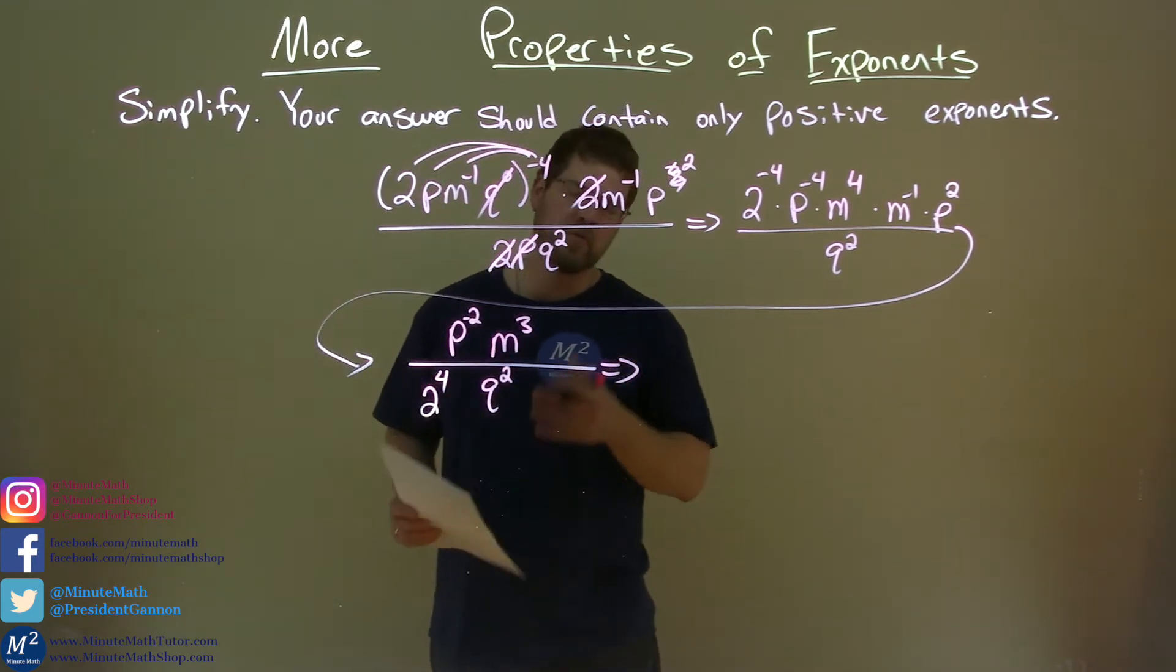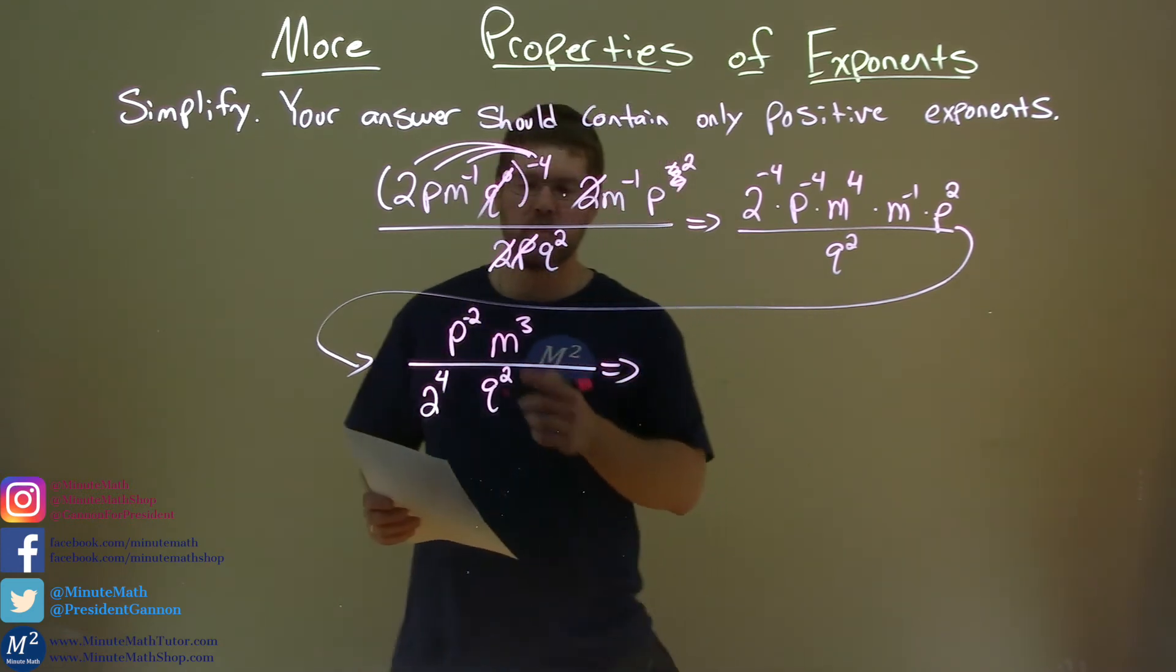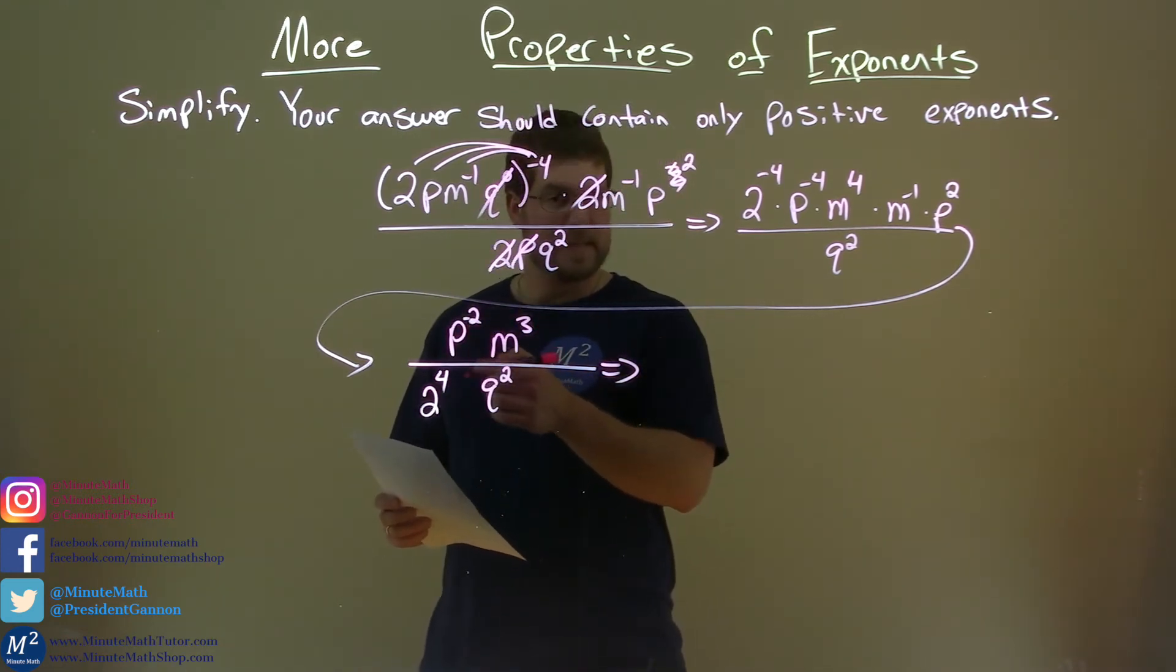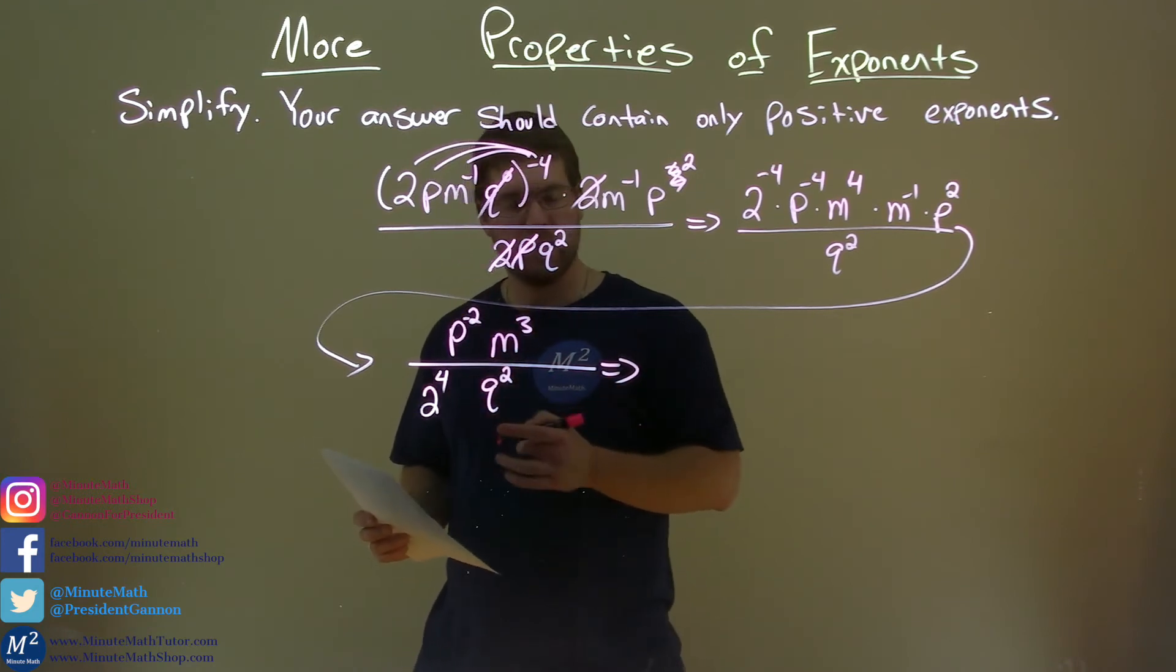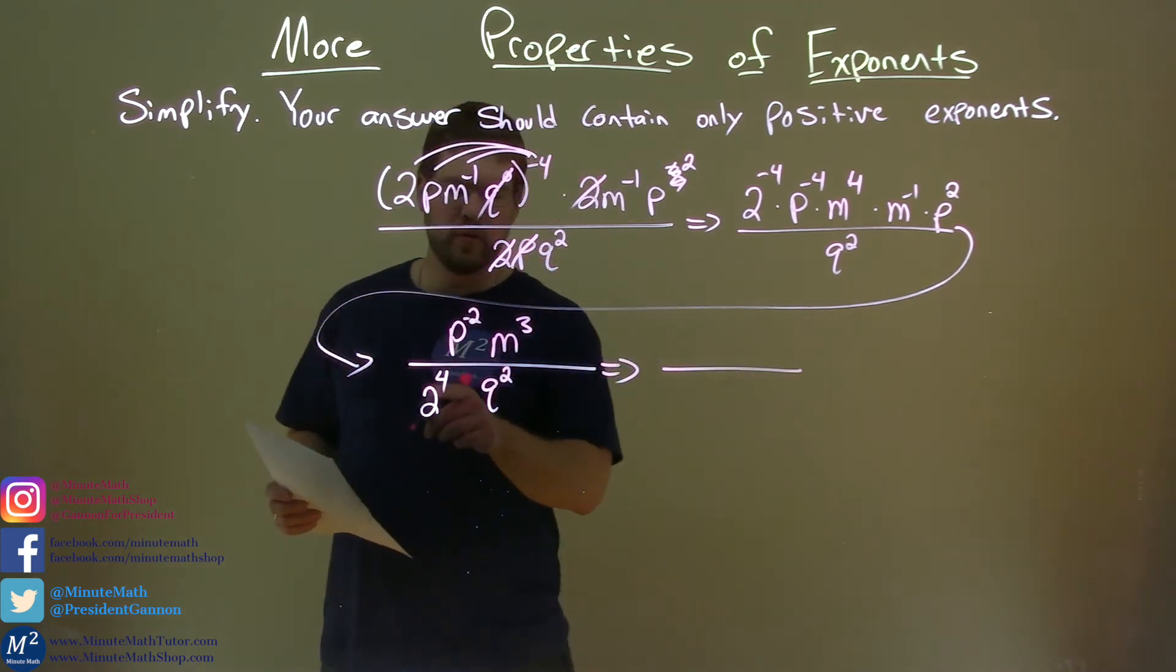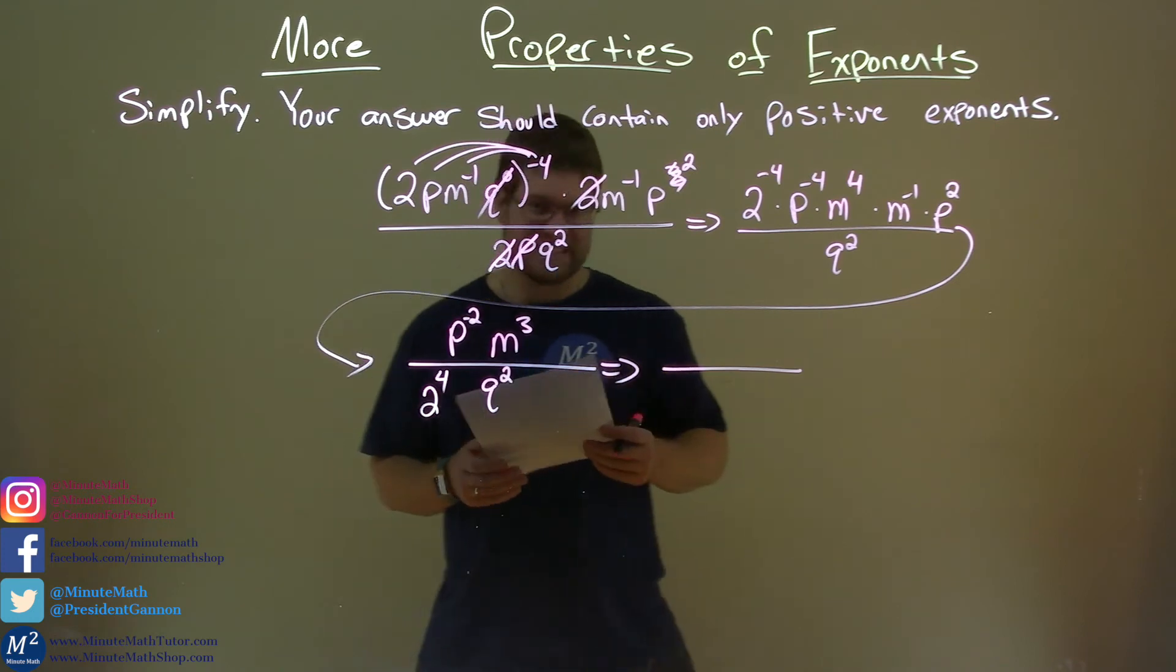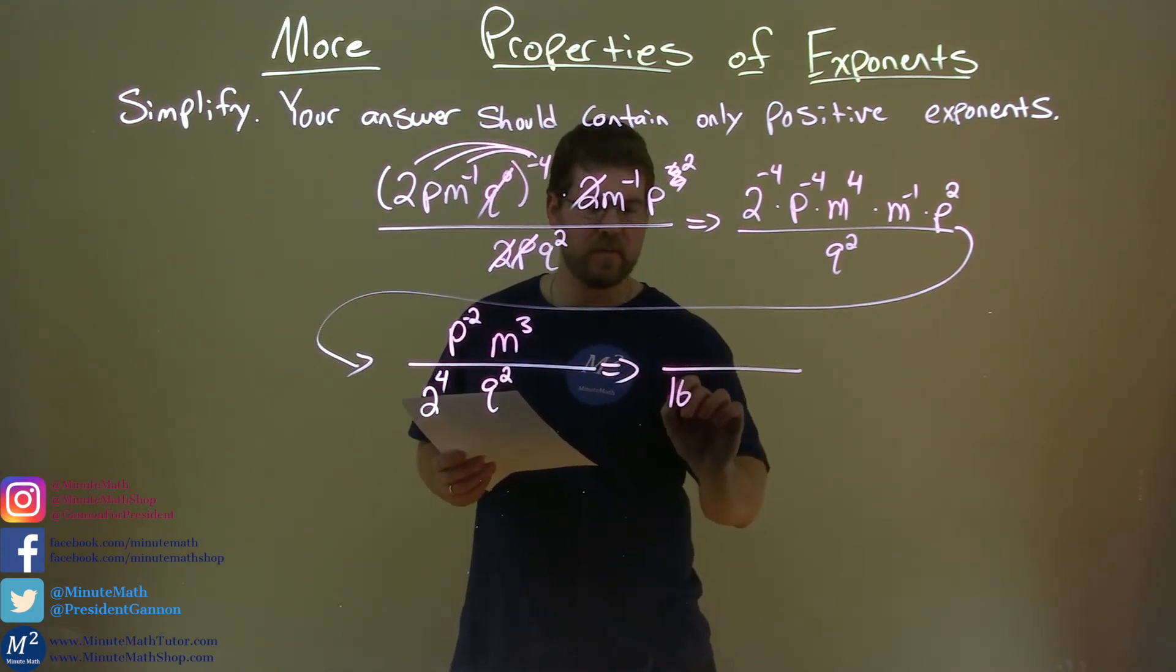Last step here. Well, a couple things we're doing in the last step. Let's bring that, we're going to bring that p squared down, p to the negative 2, to be a positive 2 power in the denominator. But first, we have 2 to the 4th power. 2 to the 4th power is 16. So 16 here.